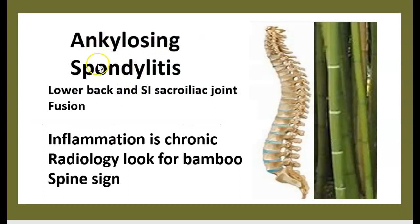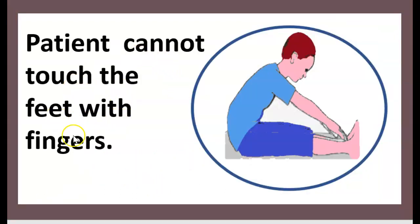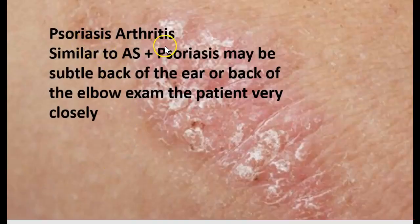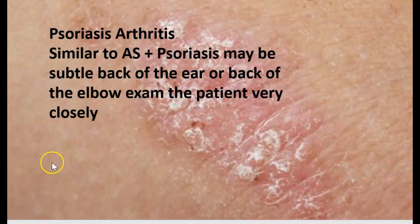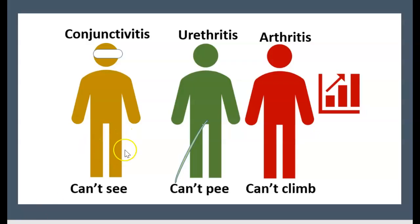In summary: ankylosing spondylitis presents with lower back pain, sacroiliac joint fusion, and chronic inflammation — look for the bamboo spine sign on radiology, and the patient cannot touch their feet with their fingers. Psoriatic arthritis is similar to AS plus psoriasis, which may be subtle — look at the back of the ear or elbow and examine closely. For reactive arthritis, think conjunctivitis, urethritis, and arthritis — can't see, can't pee, can't climb.